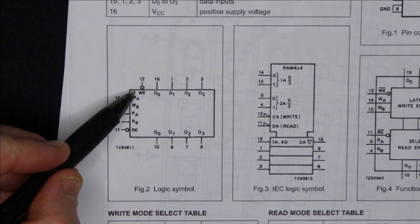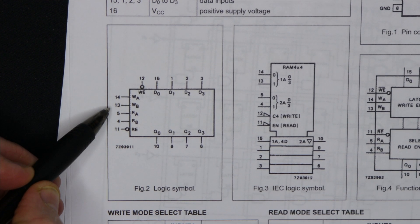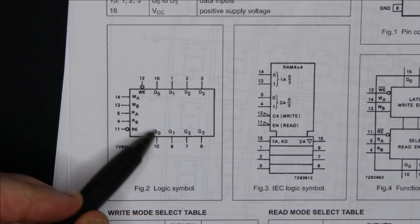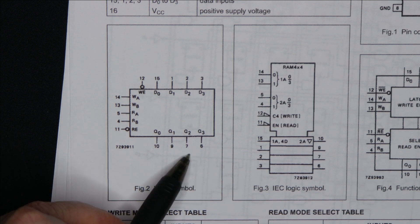There's a write enable, a read enable, two bits addressing the register inside here that's going to get written, and two bits addressing which of those four registers is going to appear on the output.